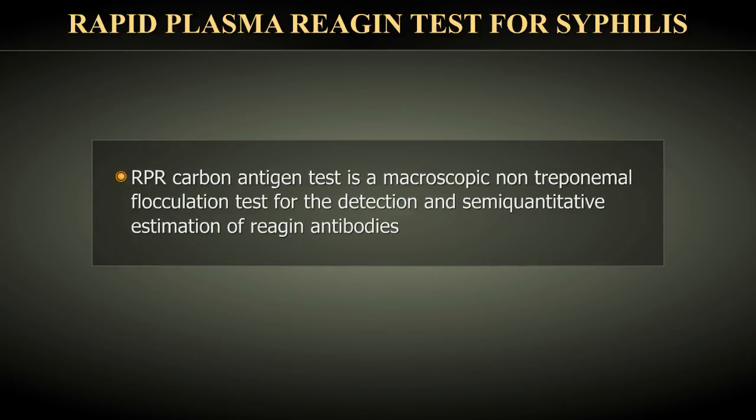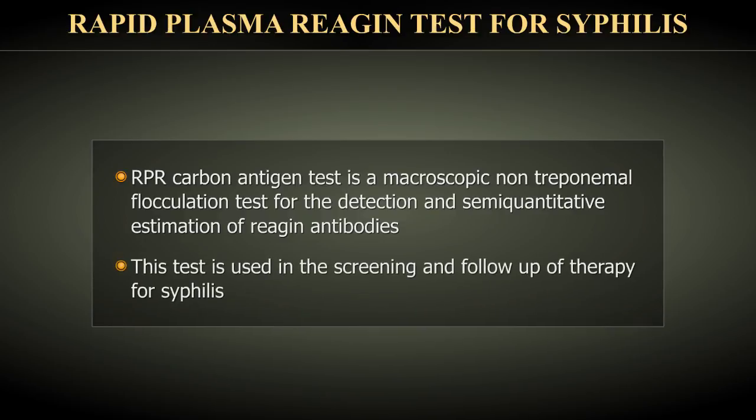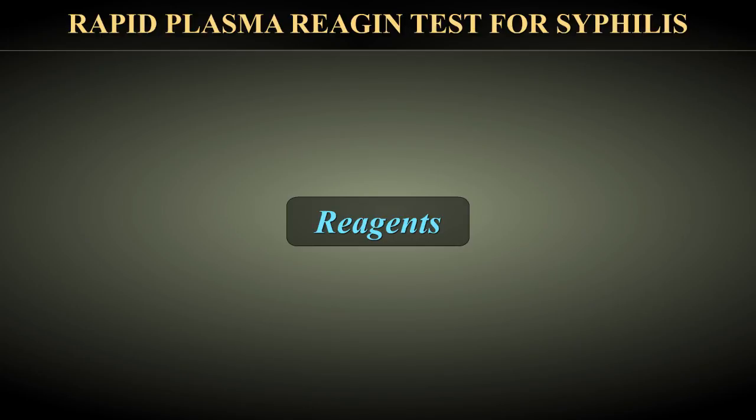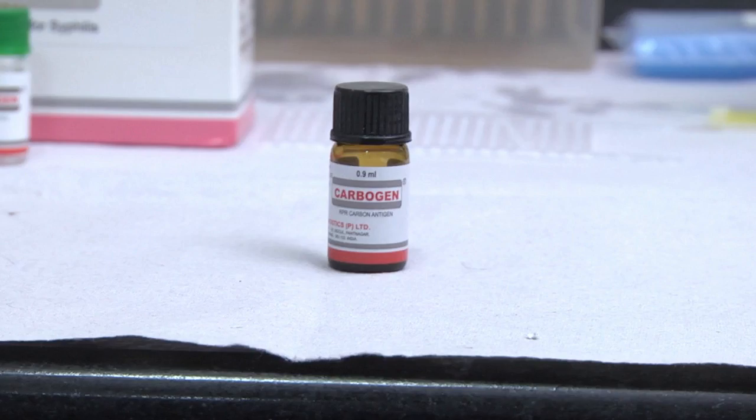The RPR carbon antigen test is a macroscopic non-treponemal flocculation test for the detection and semi-quantitative estimation of reaginic antibodies. The RPR reagent is a particulate carbon suspension coated with lipid complexes.